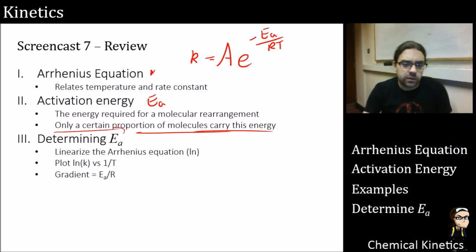And only a certain proportion of molecules will have the energy to hop over that barrier. So determining the activation energy, well, we linearize the Arrhenius equation. We take logs of both sides of it. Then we find that our variables become log k and 1 over t. And if we plot them together, we get a straight line. So if we've taken four or five experiments, we can plot them, do a best fit line, and get the gradient of it, and that gets us our activation energy.